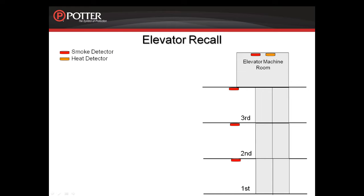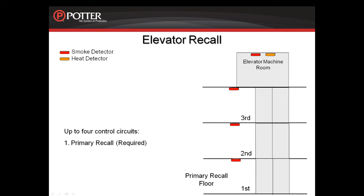Elevator recall pertains to recalling the elevators when the smoke detectors in the elevator lobbies are active. In most cases, the primary floor of egress is the first floor or ground floor of the building. In the event that there is an incident on the first floor, the elevators will recall to the secondary floor of recall, which in this case, as shown on this slide, is the second floor.